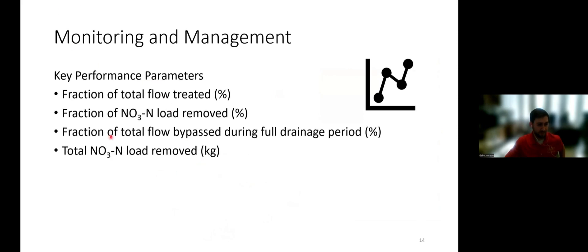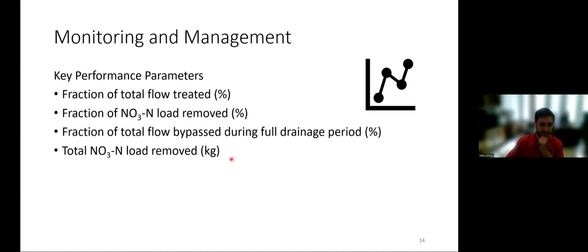The key parameters I'll be highlighting are: what fraction of total flow did we treat, what fraction of the nitrate load did we remove, what fraction of total flow was bypassed during the full drainage period when stop logs were open, and what actual mass of nitrate did this system remove. For this flat site with the controlled drainage aspect, that fraction of total flow bypassed during full drainage is particularly key.